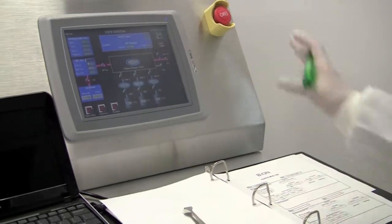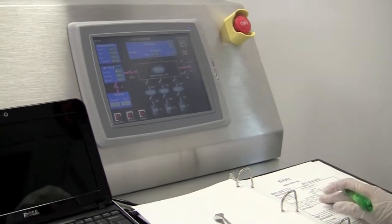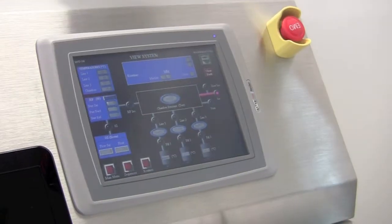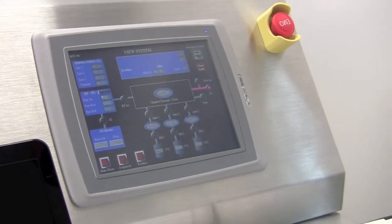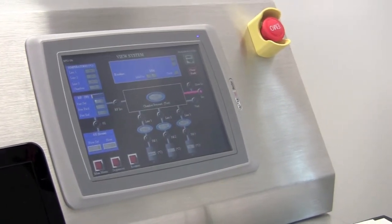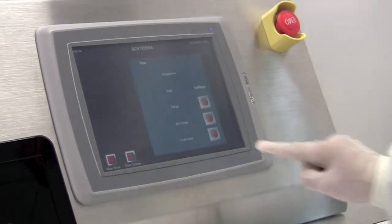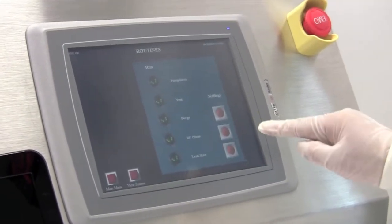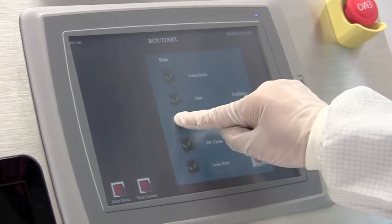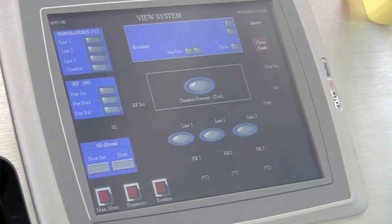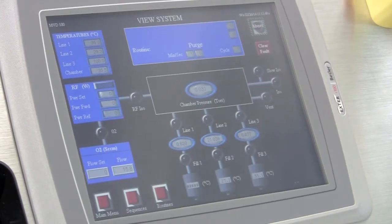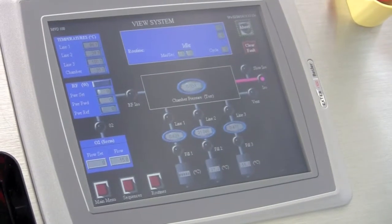So after four hours, we come back to unload the sample. Now after four hours, the process is done. The system is at idle mode. So we can unload the sample by touching the routines button. Same thing, touch purge first. It will take about one to two minutes. Now the purge step is done.